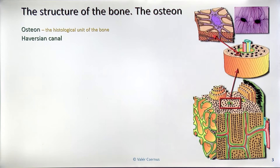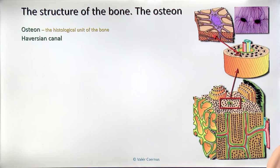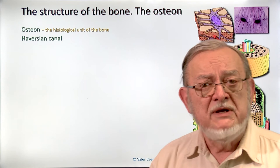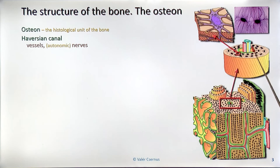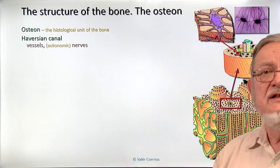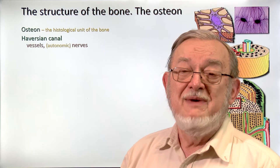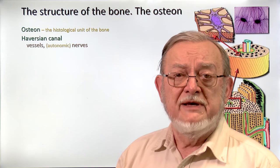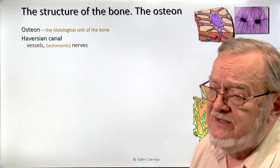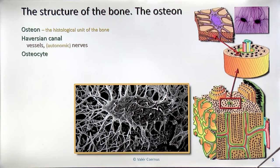In the middle of the osteon, we have a canal named the Haversian canal. Many components of bone are named after Havers, the scientist who first described the structure of human bone. In the Haversian canals, we have vessels — arteries and veins — and also nerves. As mentioned, the bone has no sensory nerves; the nerve present is autonomic, controlling the blood supply of the bone by acting on the walls of the arteries.